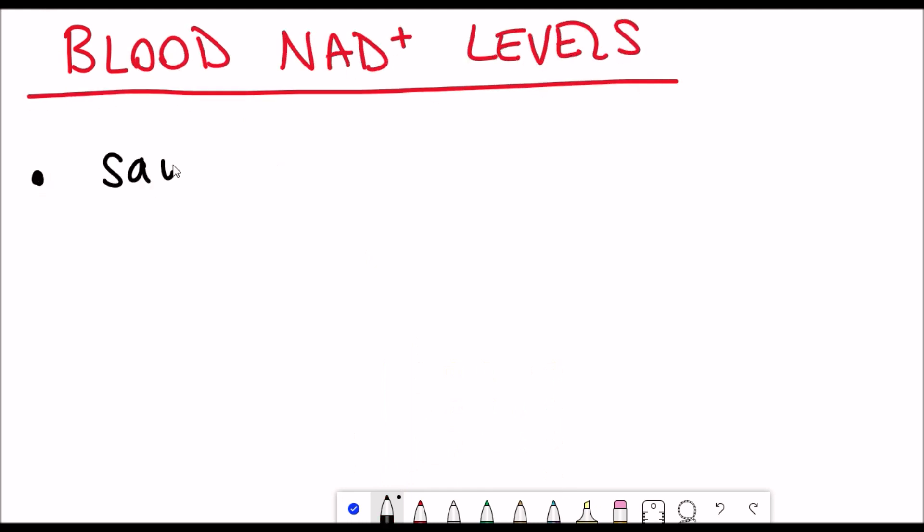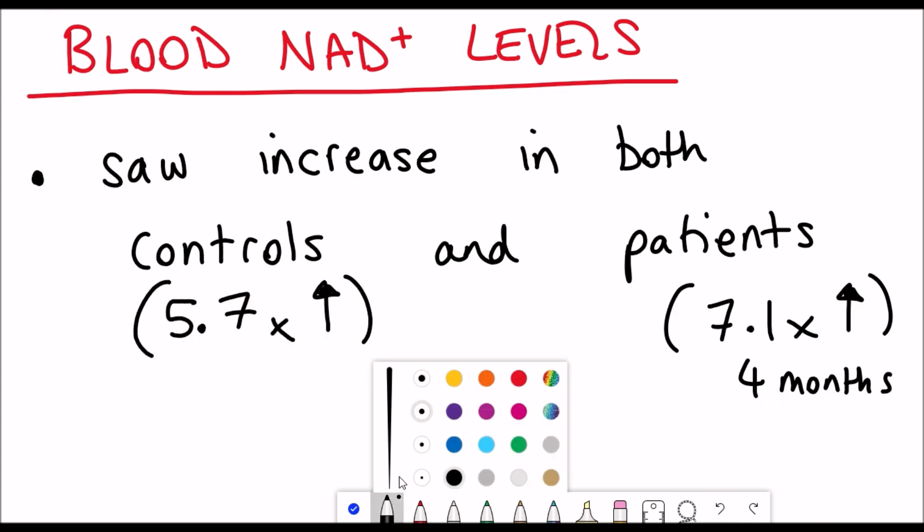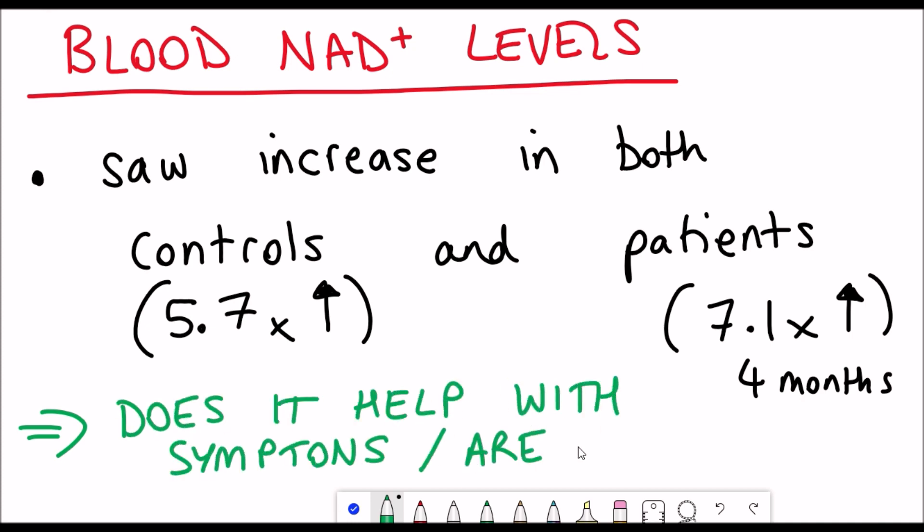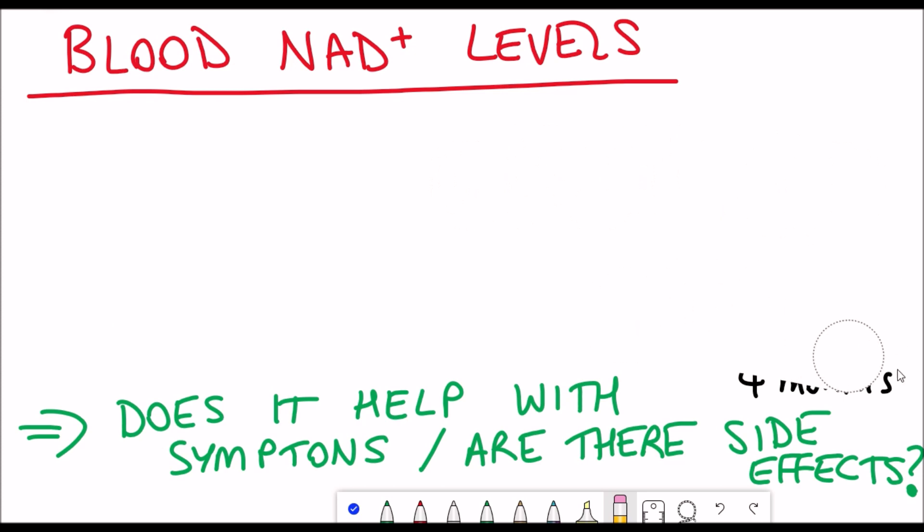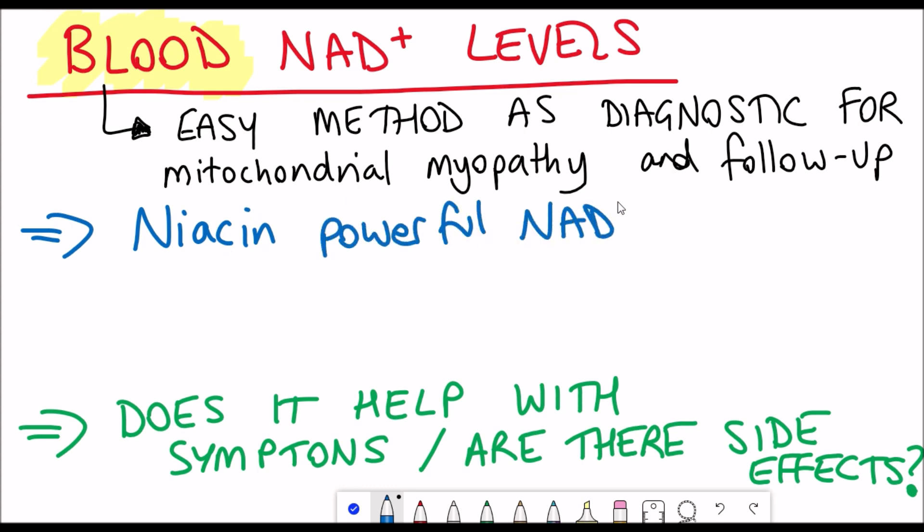Besides looking at the muscle NAD Plus levels, they also looked at the blood NAD Plus levels and they saw an increase in both the controls and the patients this time, with a 7.1 fold increase by four months in the patients and a 5.7 fold increase in the controls. Obviously this proved that niacin worked at increasing the NAD Plus levels, but the other question of the study is whether or not it actually helps with the symptoms of mitochondrial myopathy. I think it's a key thing to point out here that this was from looking at the blood's NAD Plus levels and this is potentially good as a diagnostic because the NAD Plus levels were lower in the mitochondrial myopathy patients than the controls to begin with in the study. So it could be a good diagnostic for people with the condition and it's a good way to track the effects of niacin throughout the study.